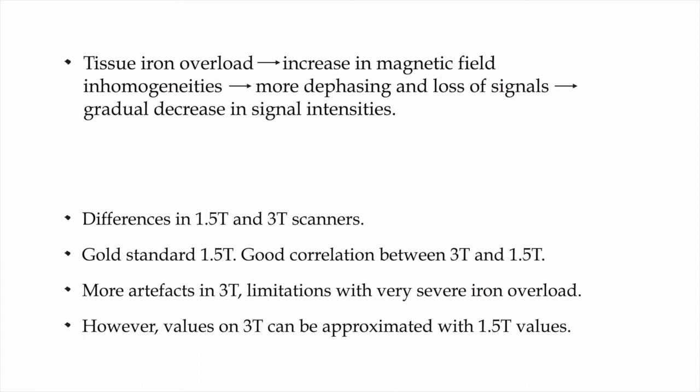Regarding whether to use a 1.5T or 3T scanner: 1.5 Tesla is the gold standard for iron quantification by MRI. However, there is a very good correlation between 3T and 1.5T values. In patients with very severe iron overload, there are more artifacts in the myocardium on 3 Tesla images, and quantification may yield only limited values. So the first preference for iron overload assessment is a 1.5 Tesla machine, though 3T machines are also good and their values correlate well with 1.5T.